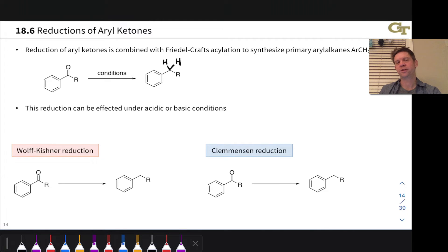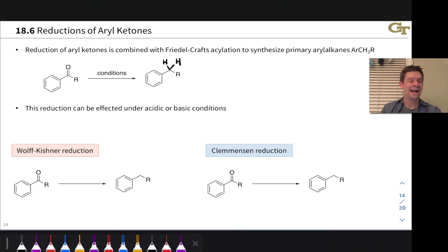Friedel-Crafts acylation is especially powerful for the synthesis of primary alkyl benzenes with a CH2 group linked directly to the aromatic ring. One reason they're so powerful is trying to do this with Friedel-Crafts alkylation directly does not work.